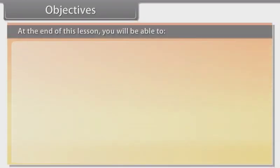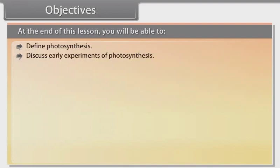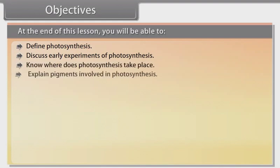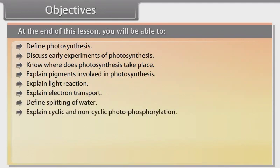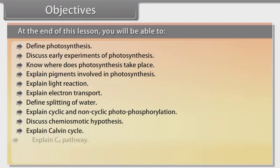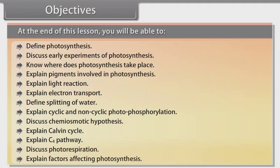At the end of this lesson, you will be able to: define photosynthesis, discuss early experiments of photosynthesis, know where photosynthesis takes place, explain pigments involved in photosynthesis, explain light reaction, explain electron transport, define splitting of water, explain cyclic and non-cyclic photophosphorylation, discuss chemiosmotic hypothesis, explain Calvin cycle, explain C4 pathway, discuss photorespiration, and explain factors affecting photosynthesis.